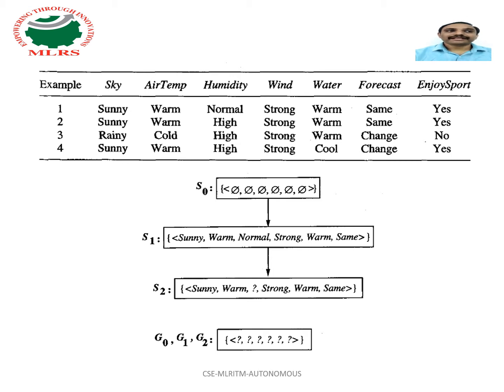In both examples, sky attribute values are sunny only, so we are keeping sunny as is. For air temperature, attribute values are warm, so we are keeping warm as is. For humidity, in the first example its value is normal, in the second example its value is high.